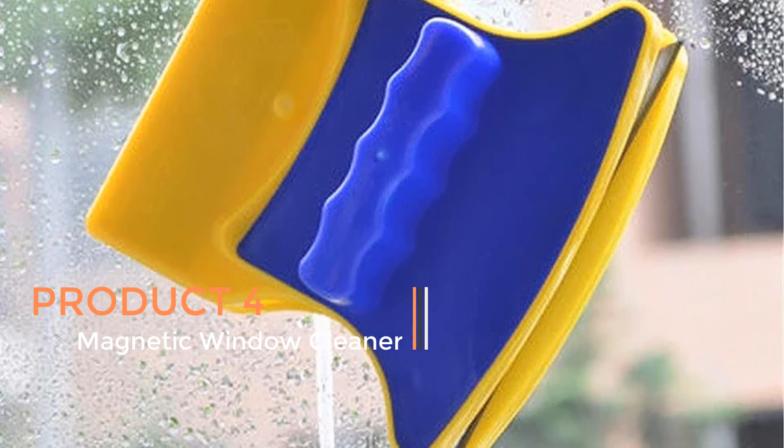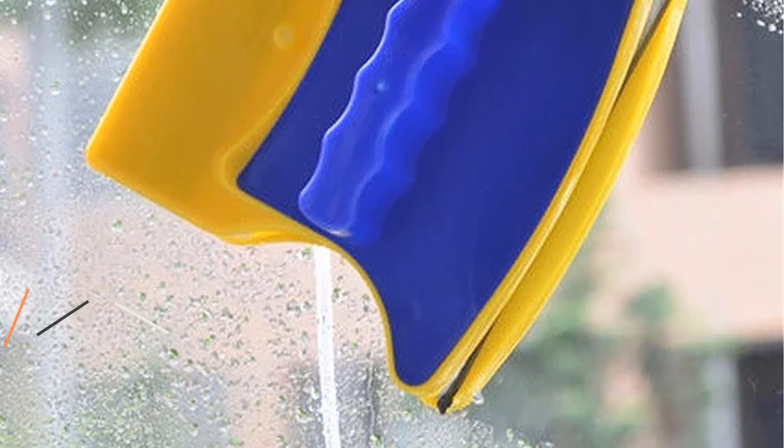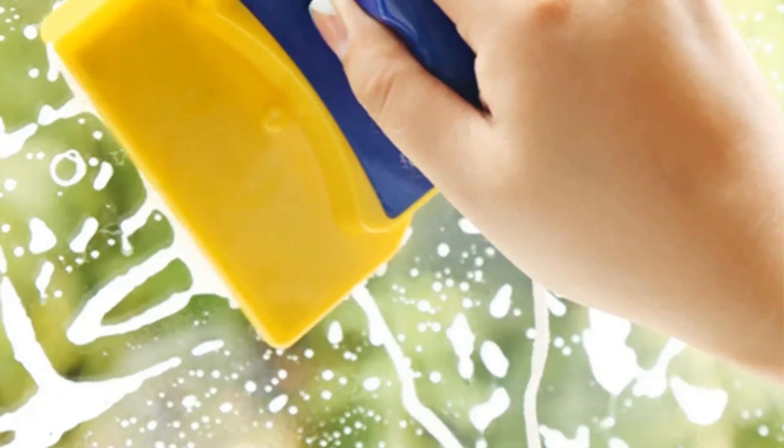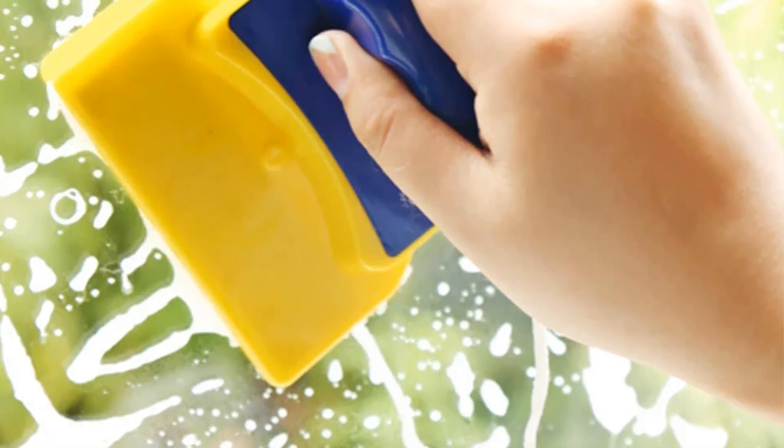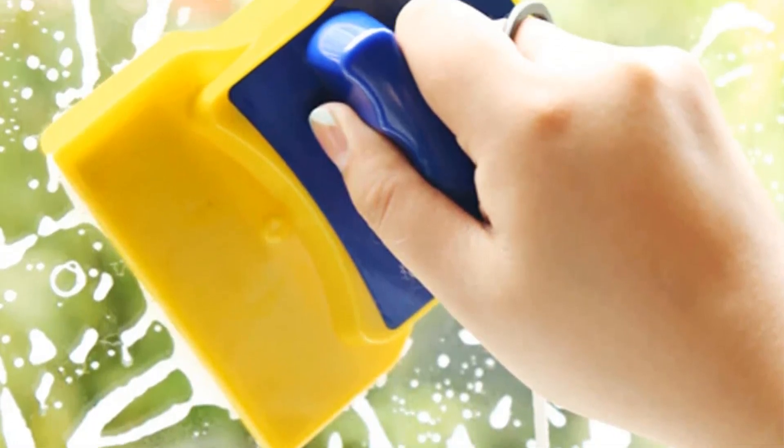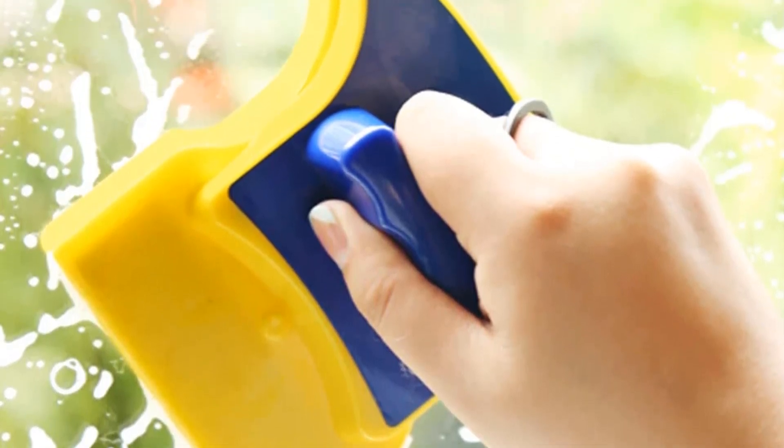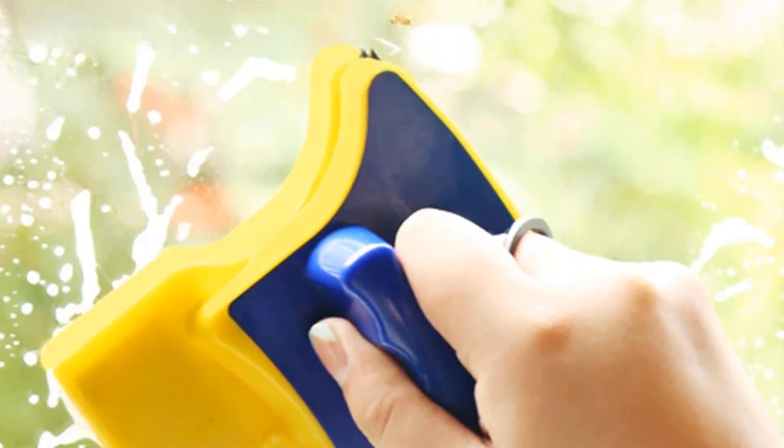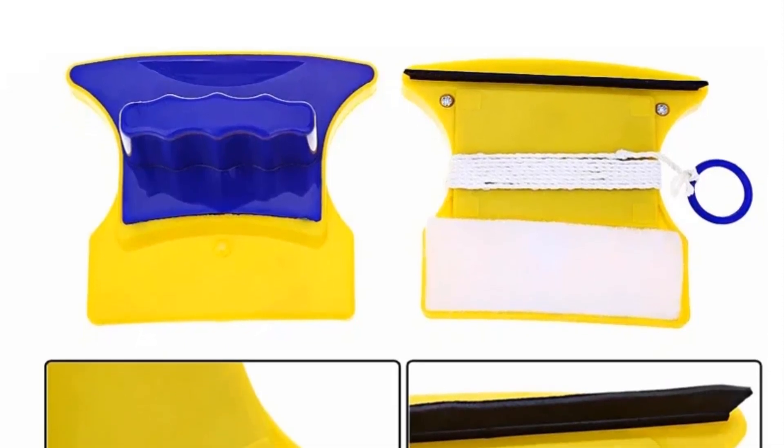The Magnetic Window Cleaner is an innovative and practical tool designed to simplify the task of cleaning windows, particularly those in households. This cleaning device utilizes a unique magnetic system that allows it to be used both inside and outside of windows simultaneously. The tool typically consists of two parts: an outer piece and an inner piece, each equipped with a strong magnet. To use the Magnetic Window Cleaner, one part is placed on the inside of the window and the other on the outside.